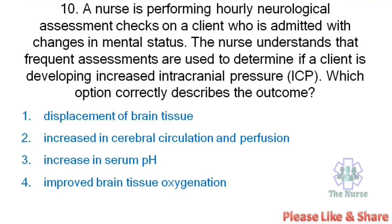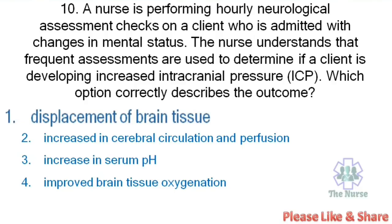Next question: A nurse is performing hourly neurological assessment checks on a client admitted with changes in mental status. The nurse understands that frequent assessments are used to determine if a client is developing increased intracranial pressure. Which option correctly describes the outcome? Options: Displacement of brain tissue, increased cerebral circulation and perfusion, increase in serum pH, improved brain tissue oxygenation. Correct answer: Displacement of brain tissue.